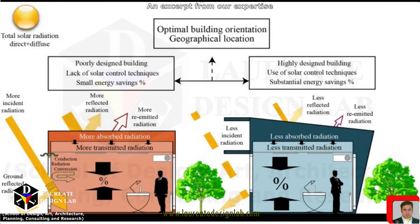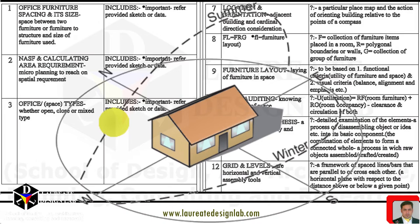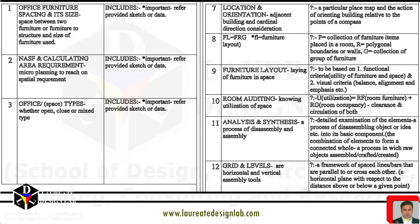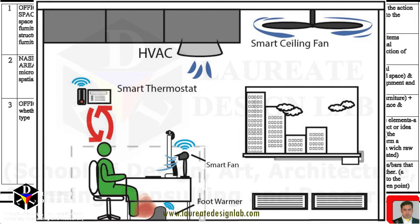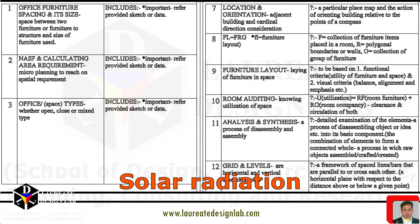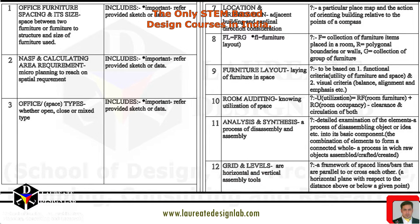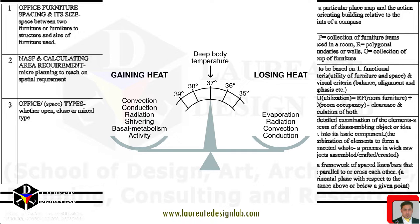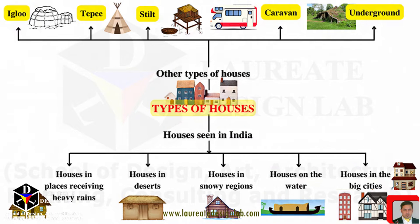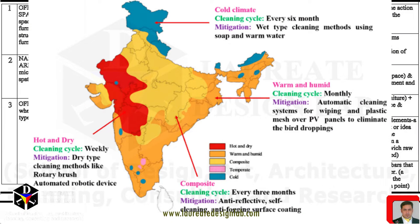The direction of a building can have a significant impact on the amount of solar radiation it receives. Buildings oriented towards the south will typically receive more solar radiation during the winter months, when the sun is lower in the sky, while buildings oriented towards the north will typically receive less radiation during the summer months, when the sun is higher in the sky. This can be beneficial in terms of energy efficiency, as it can reduce the need for artificial heating and cooling. However, buildings that receive too much solar radiation can also become overheated, leading to discomfort for occupants and increased energy use. It is important to consider the local climate and occupants' specific needs when determining the direction and orientation of the building.